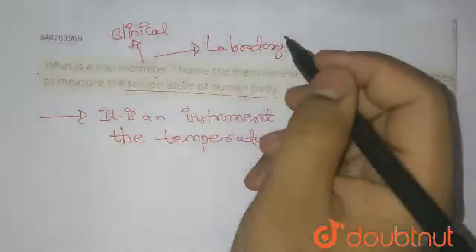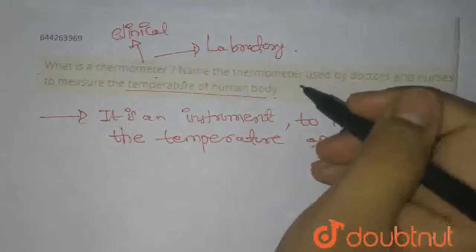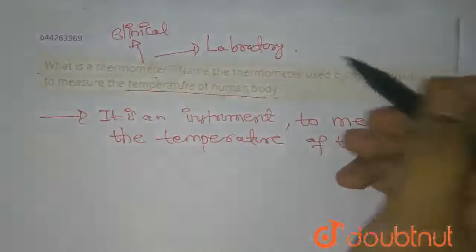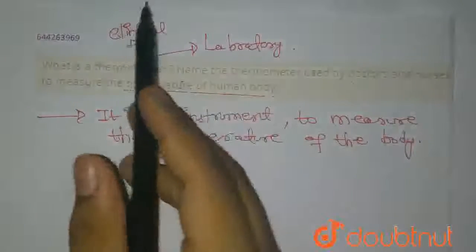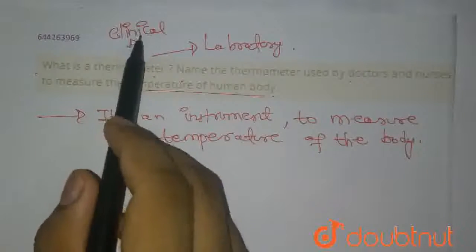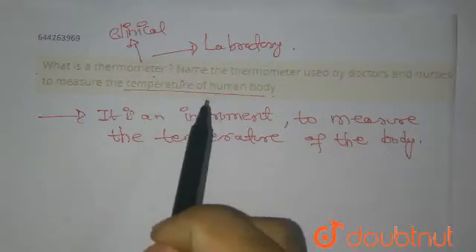The laboratory thermometer is used in chemistry lab and biology lab to measure the temperature of different chemicals. Whereas clinical thermometers are especially designed to measure the temperature of any human body.